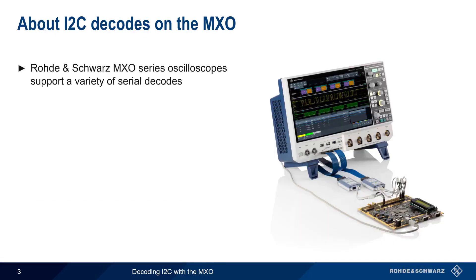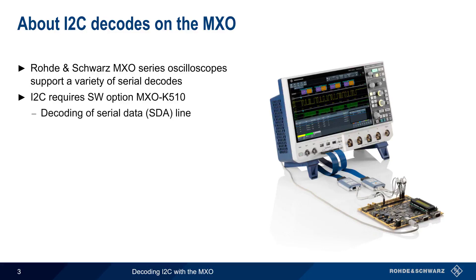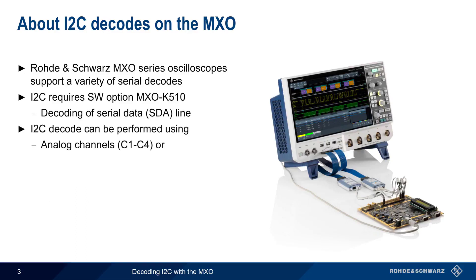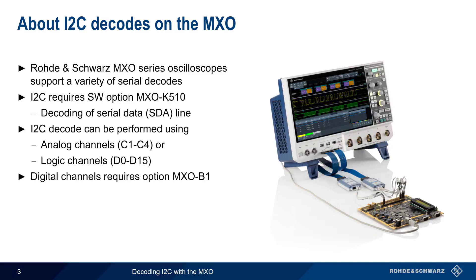Rohde & Schwarz MXO Series Oscilloscopes support a wide variety of serial decodes. I2C decodes require software license K510, which enables decoding of the I2C serial data, or SDA line. Decoding can be performed using standard analog channels or logic/digital channels. Note that digital channels require the MXO B1 option as well.